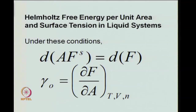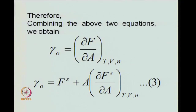By combining these two equations, we find γ₀ is equal to ∂/∂A of (A·F_s), since F = A·F_s. After performing this differentiation, we get γ₀ equal to F_s plus A times ∂F_s/∂A at constant T, V, and N.